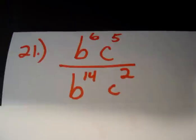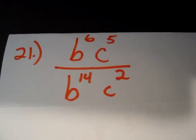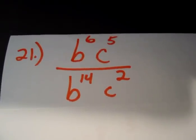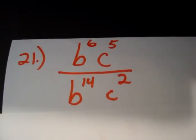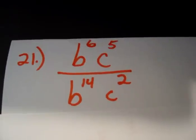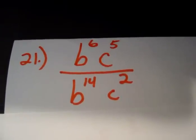Number 21 says b to the 6th times c to the 5th, all divided by b to the 14th times c squared. Notice that you have variables of b and c in both the numerator and denominator. You are going to subtract exponents of like variables since we're dividing.